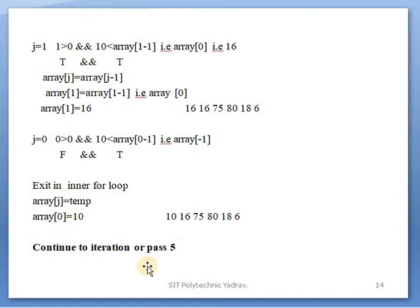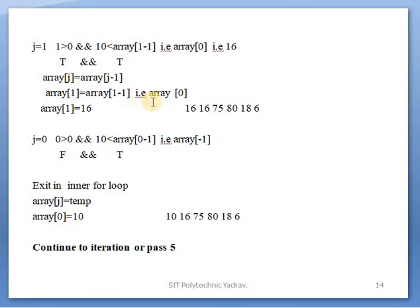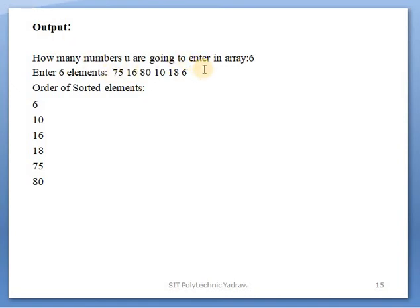The output shows: how many numbers are you going to enter in the array — 6 numbers — then output is displayed in ascending order. For homework, the descending order version requires only one symbol change: the less than sign is changed to greater than. That is for you to think about.